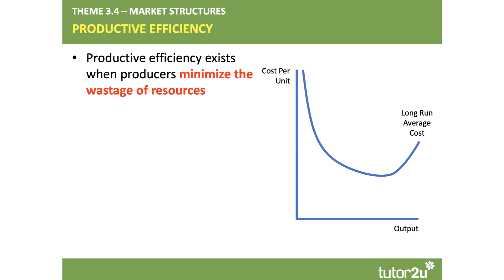Have a look at the diagram on the right hand side, which shows the long run average cost — the cost per unit of a product that we're making, for example. When the average cost is falling, there are economies of scale. When the average cost is rising, there are diseconomies of scale.